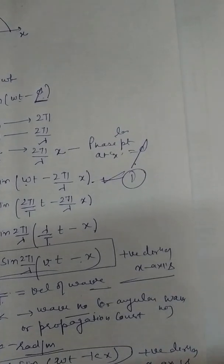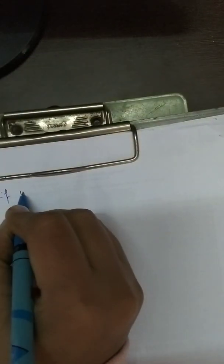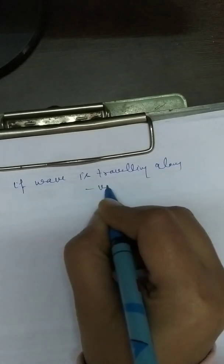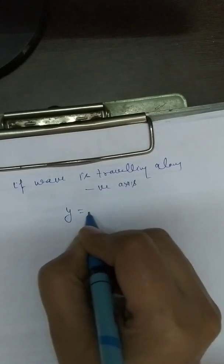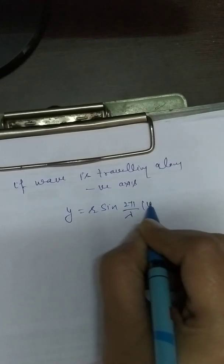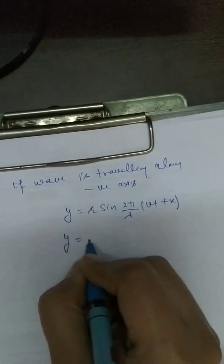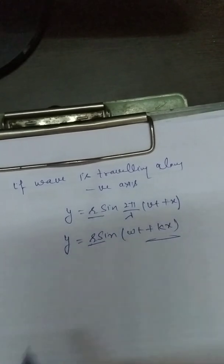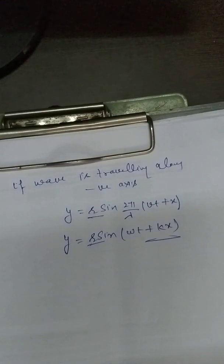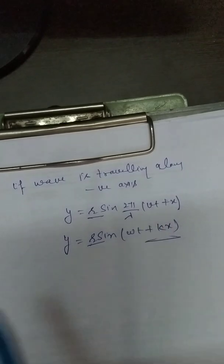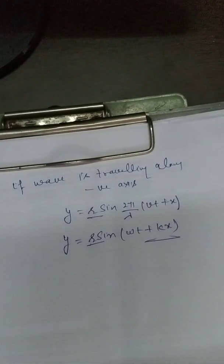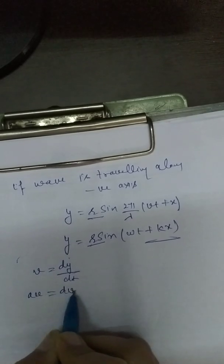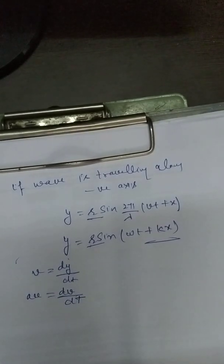If the wave is traveling along the negative x-axis, the sign becomes plus: y = r sin(2π/λ · (vt + x)) or equivalently y = r sin(ωt + kx). Here r is the amplitude. To find the particle velocity, differentiate: v_particle = dy/dt; and for acceleration: a = dv/dt.